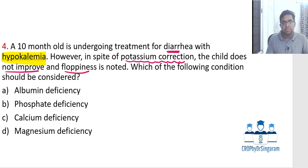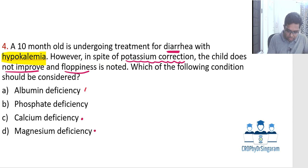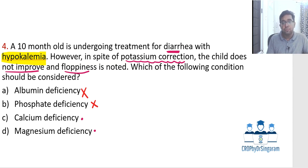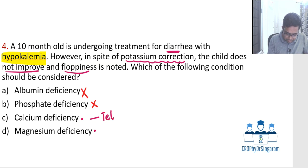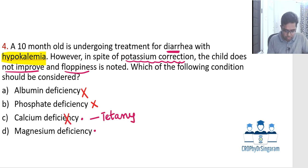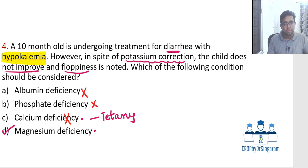The options are albumin deficiency, phosphate deficiency, calcium deficiency, or magnesium deficiency. The close calls are calcium deficiency or magnesium deficiency. Albumin and phosphate deficiency are unrelated to this presentation. Calcium deficiency typically presents with tetany — no signs of tetany are given in the question, so that can be ruled out. Therefore, the answer is magnesium deficiency or hypomagnesemia. Hypomagnesemia can be associated with muscle weakness, which is why this child was not improving even after potassium correction.